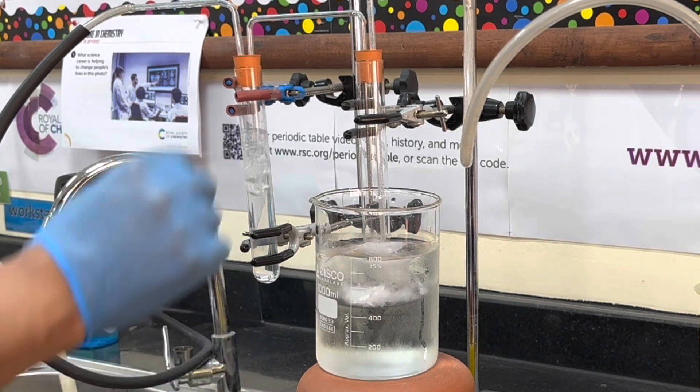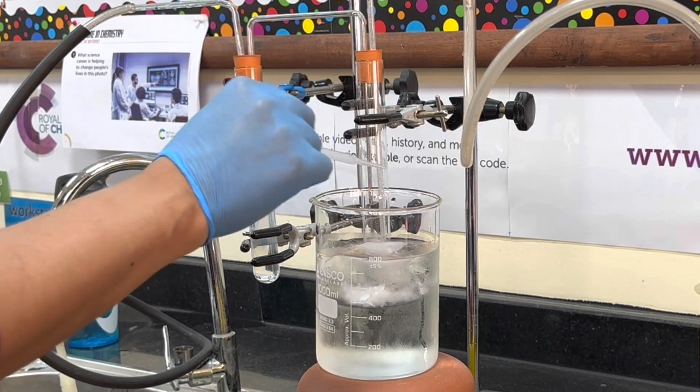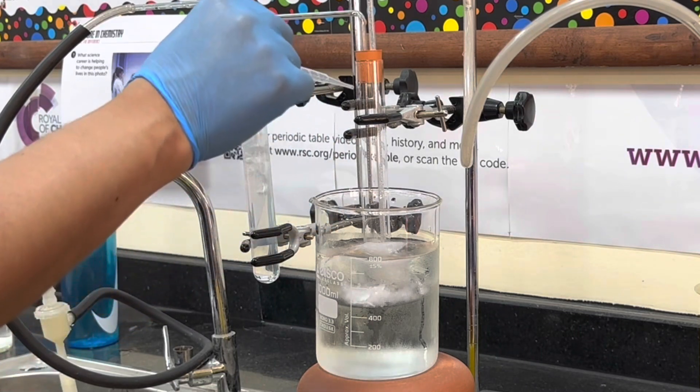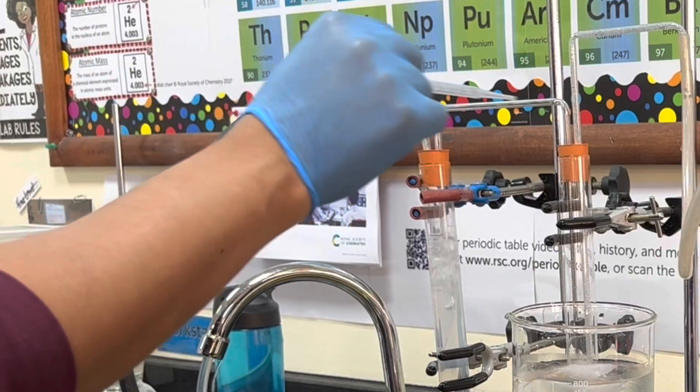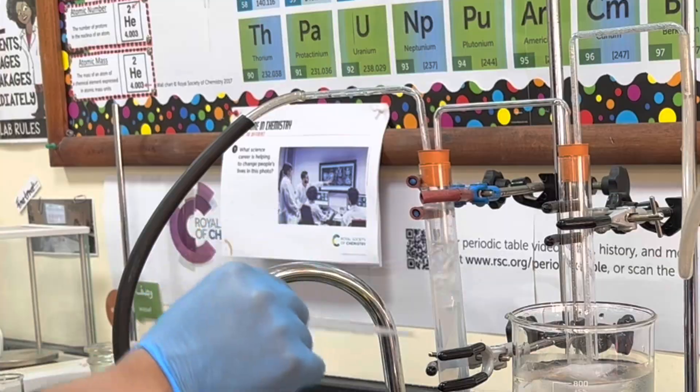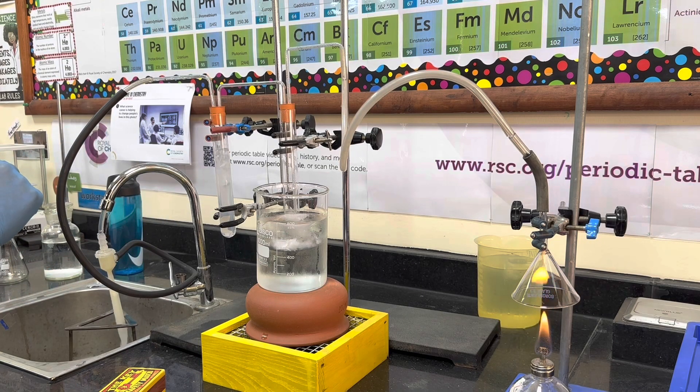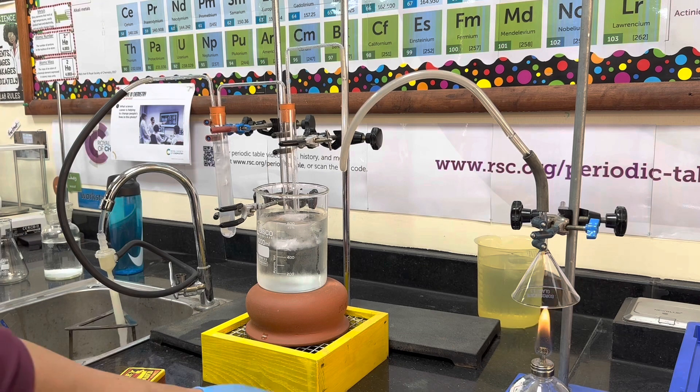You've got some glass tubing with delivery tubes running into a boiling tube that's sealed from the outside. The outside has an ice bath to cool the gases down, and then the gas mixture is passed through some lime water, which we hope will confirm the presence of carbon dioxide.